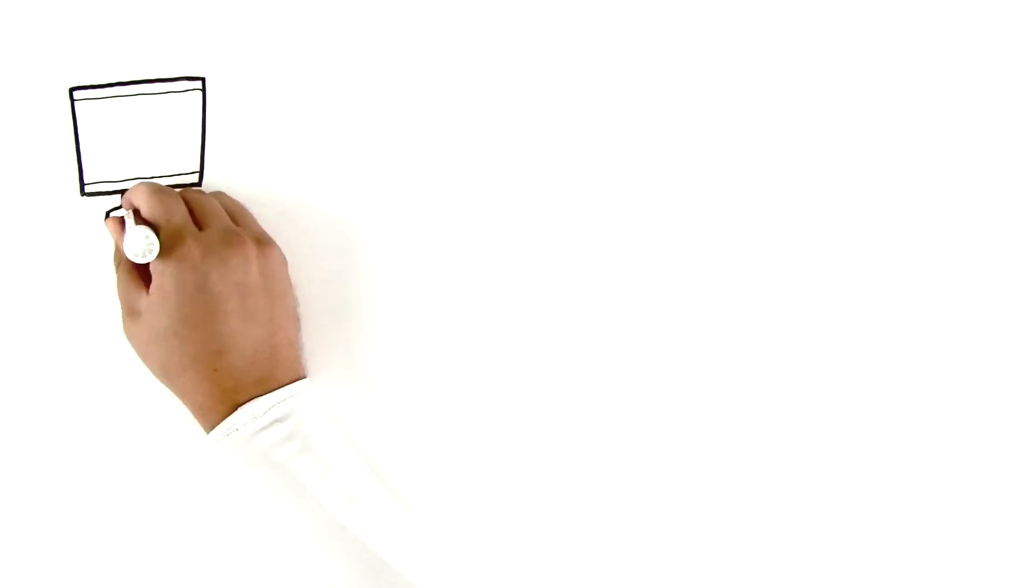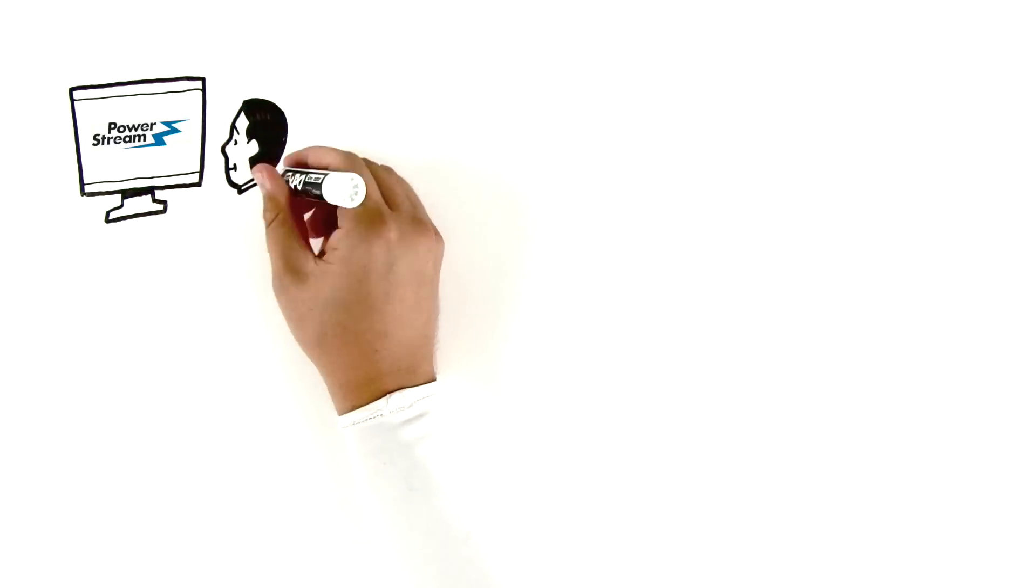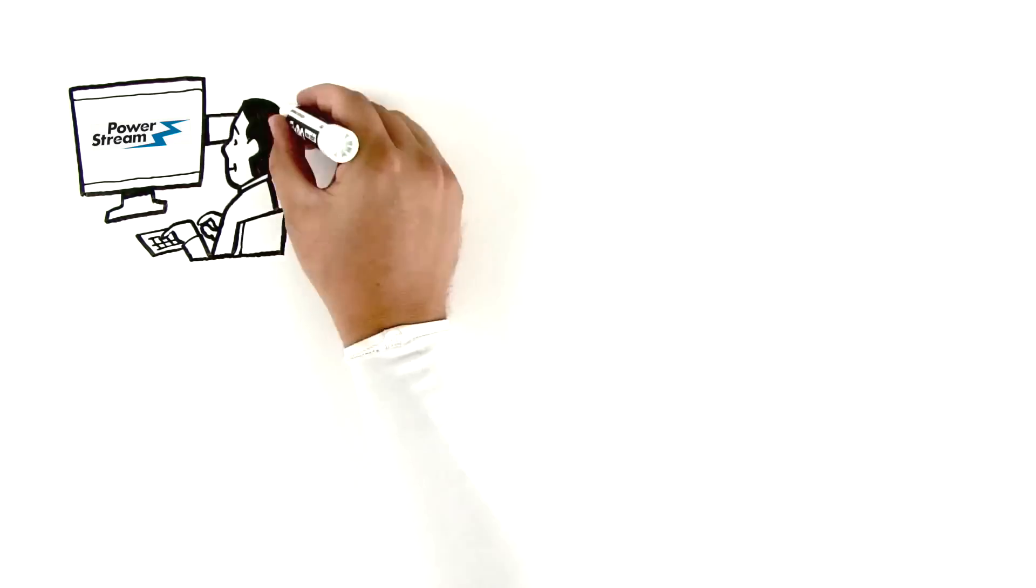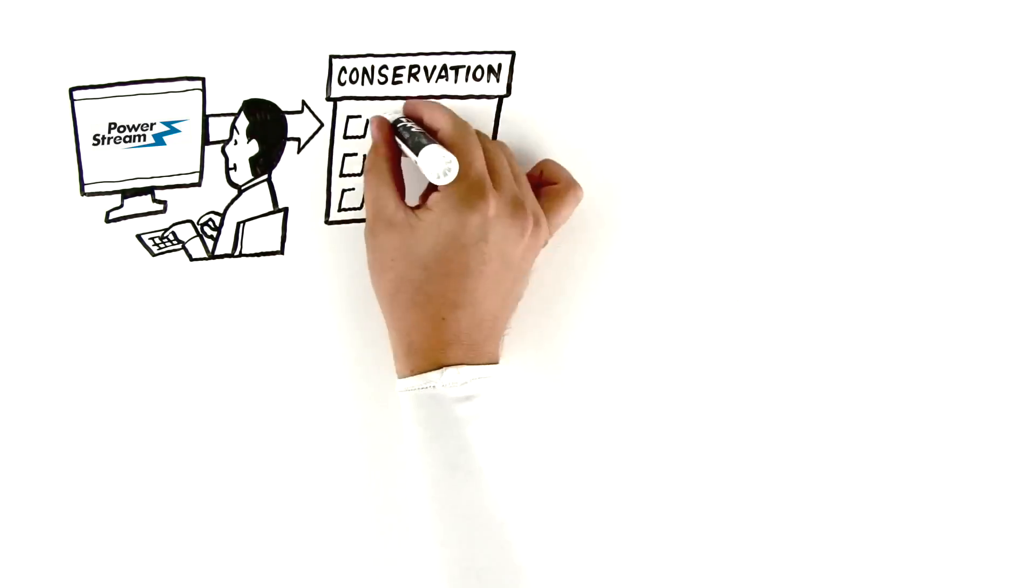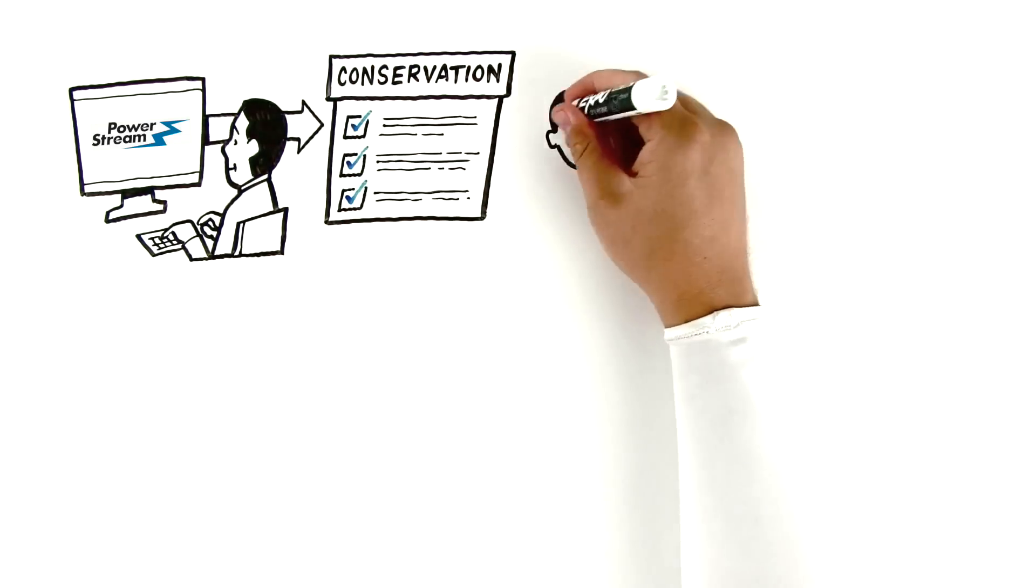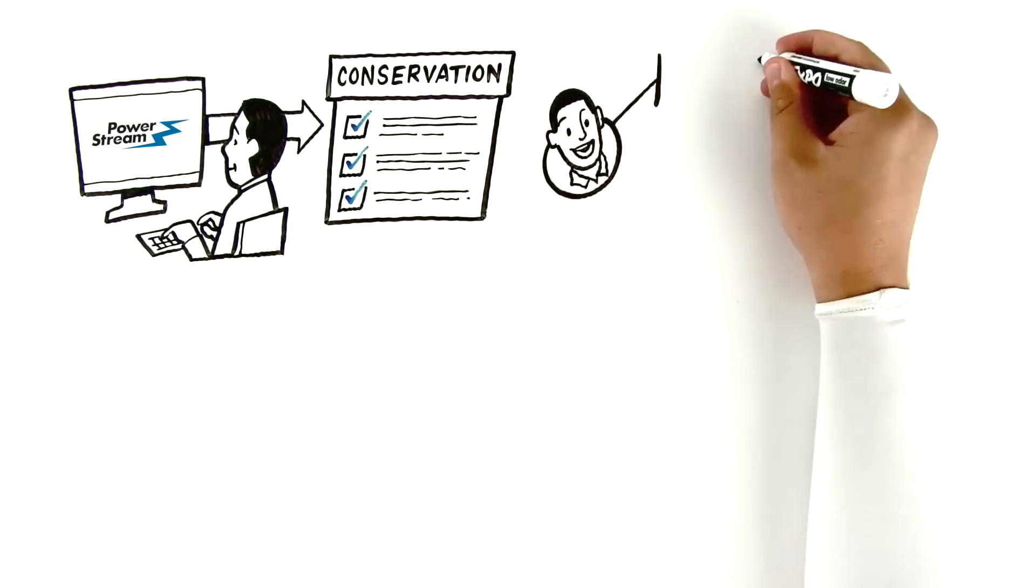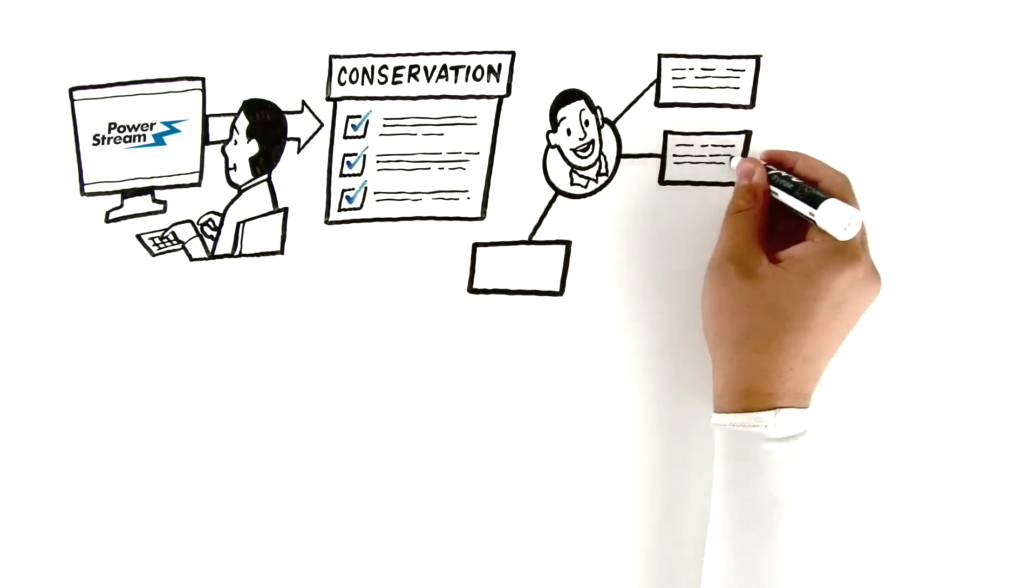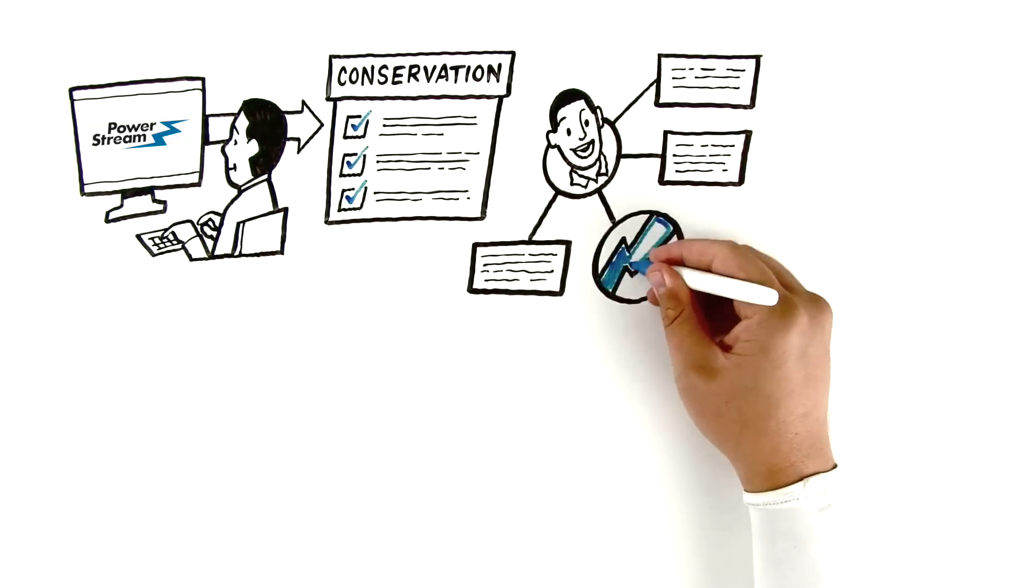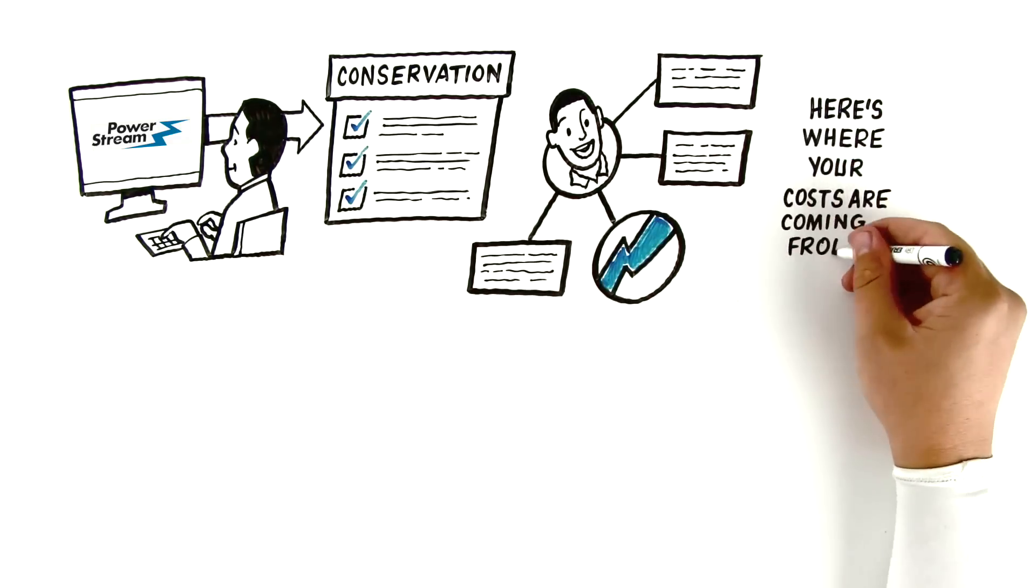To get a better understanding, Jim visited the PowerStream.ca website. This site has information on conservation programs and detailed personal usage data that helps him better manage his electricity costs and helped inform him about when his electricity was being used and where other costs were coming from.